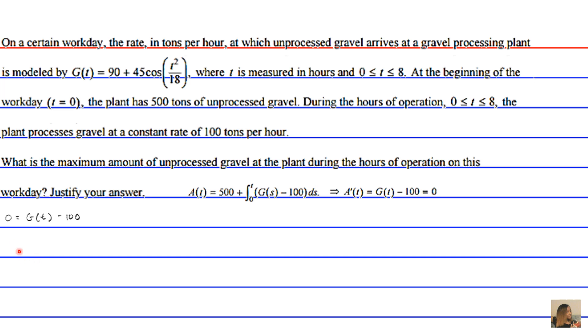So, 0 = G(t) - 100. Basically, G(t) = 90 + 45cos(t²/18) minus 100. But if we carry over 100 to the left-hand side, we add 100 to both sides, we basically set 100 equivalent to G(t).